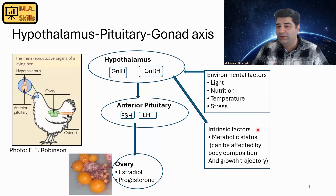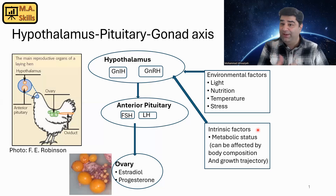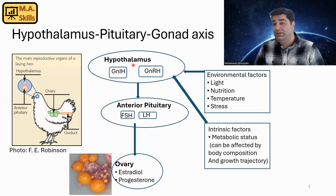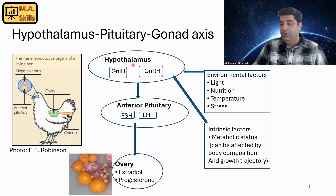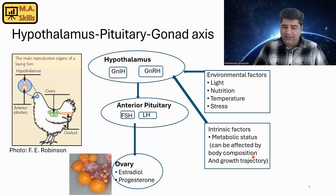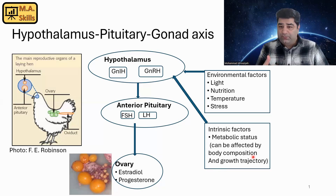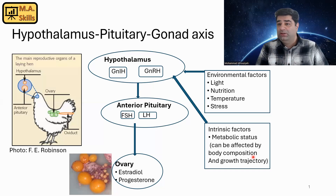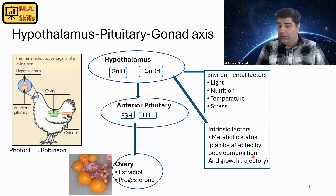On the other hand, we have some intrinsic factors — meaning factors related to the body. We call this metabolic status. Metabolic status can affect the hypothalamus in a positive or negative way, and it boils down to the body composition of the birds. When we talk about body composition, we're talking about lean mass — like breast muscle — and also the amount of fat and adipose tissue, because adipose tissue can produce adiponectin and other adipokines involved in the reproductive axis.